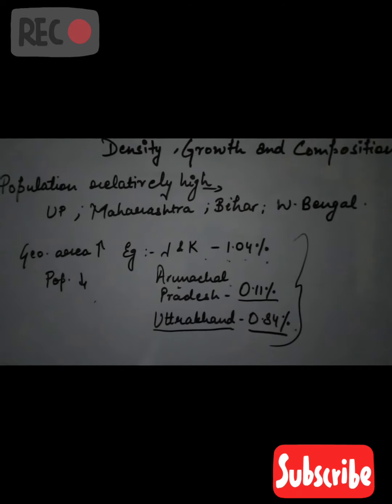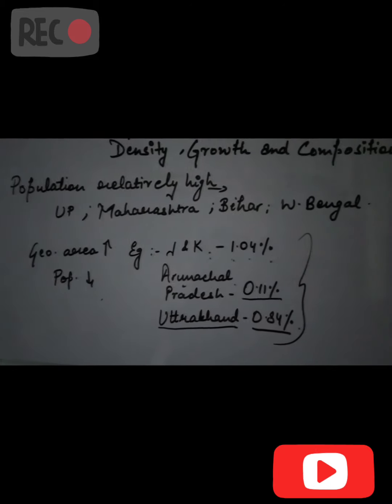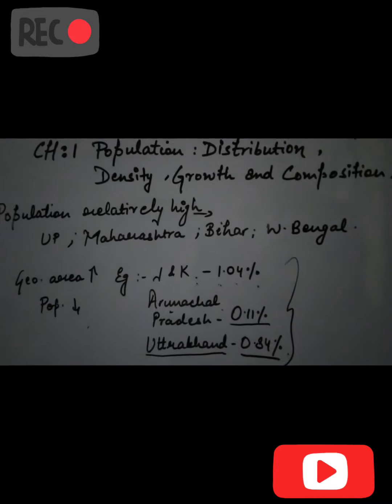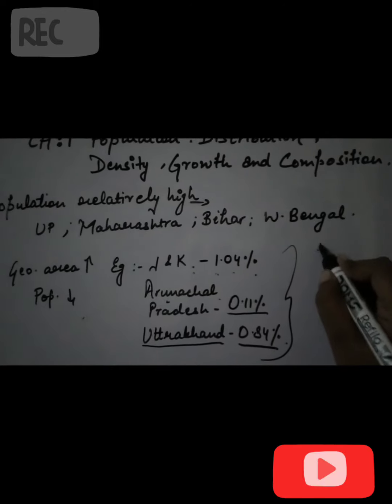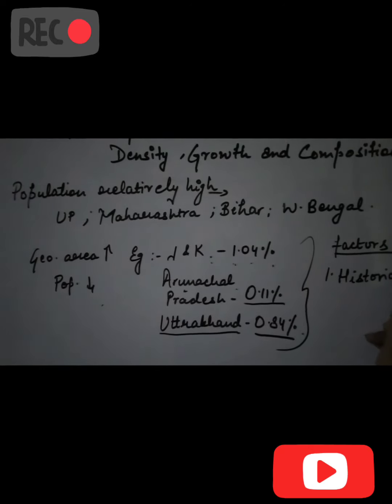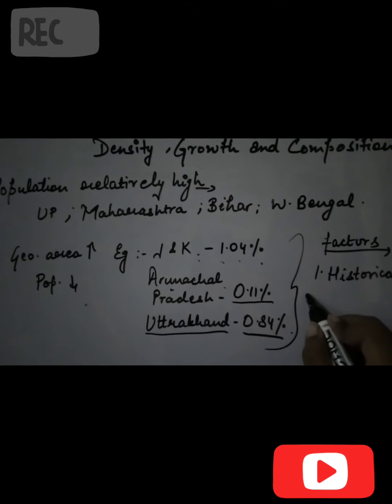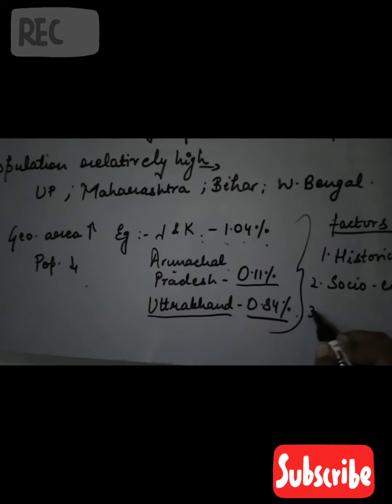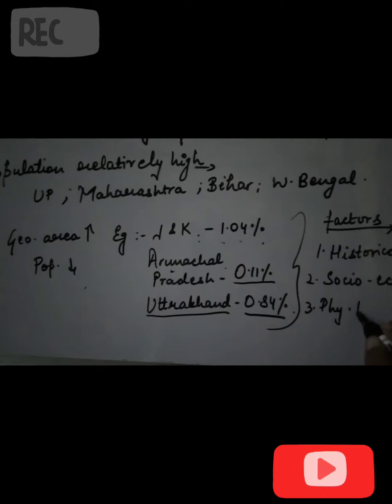Why is this? Why does the geographical area remain very high but population very low? There are some factors responsible for the population differing across regions. The first is historical factors, the second is socio-economic factors, and the third is physical factors.